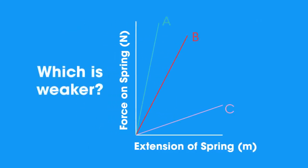Which is the weakest spring? A, B or C? Pause the video while you think. Well, C is the weakest spring, needing only a small force to make a big extension.